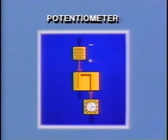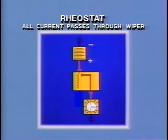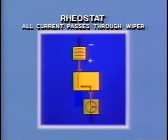When the wiper is near the entry point of the coil, resistance is minimal. Most of the current exits through the wiper, so the lamp is bright. As the wiper moves across the coil, current must flow through more resistance before exiting the wiper, so the lamp dims. A rheostat is very similar to a potentiometer. The basic difference is that the coil is not grounded, so current passes through the coil and wiper.